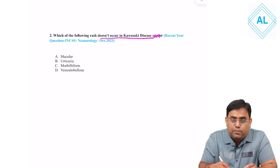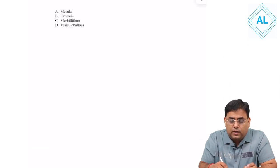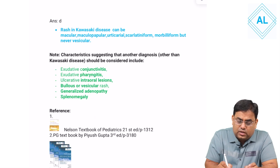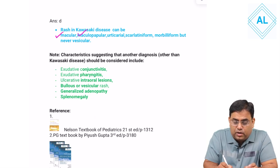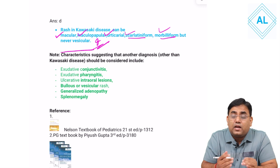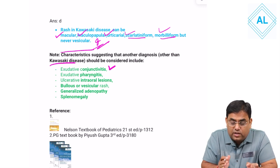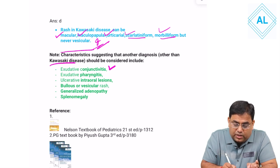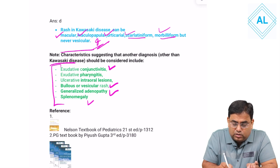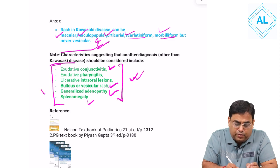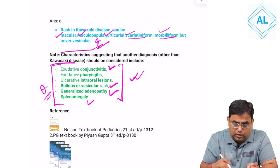This is written in Nansen, and various types of rash can be seen in Kawasaki disease as written in the Piyush Gupta PG textbook. Rashes in Kawasaki can be macular, maculopapular, articular, scarlatiniform, morbilliform, but never vesicular. Kawasaki disease is also unlikely if there is exudative conjunctivitis, exudative pharyngitis, ulcerative oral lesions, vesiculopustular rash, generalized adenopathy, and splenomegaly. This is very important for exams.